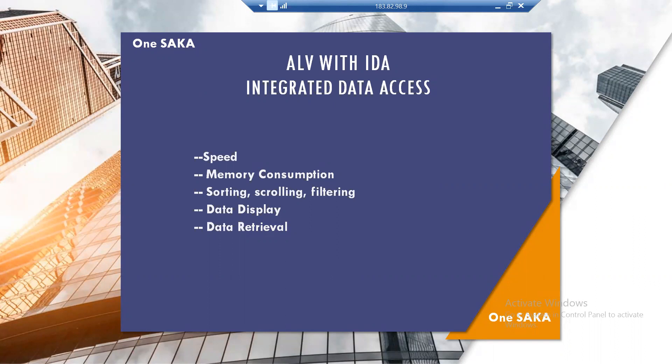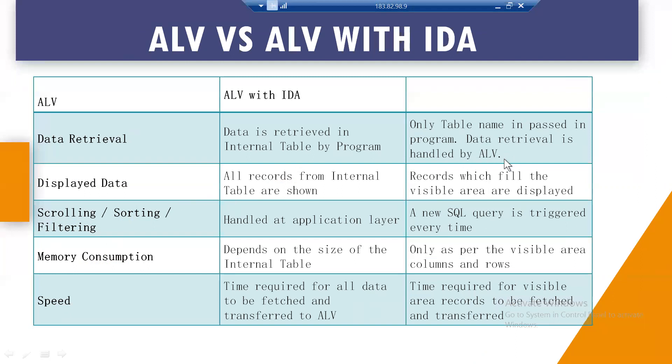Another difference is data retrieval. In normal ALV, data is retrieved into an internal table in the program — all data is brought to the application layer. But with IDA, we just pass the table name and data retrieval is taken care of by ALV. You do not need to worry about fetching the data. In normal ALV, you retrieve all the data to an internal table in the application layer yourself.